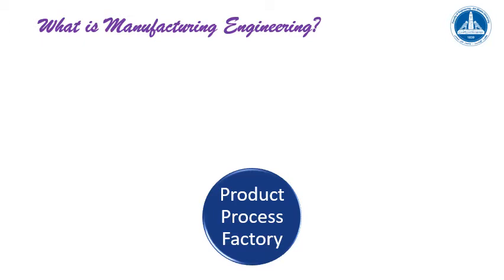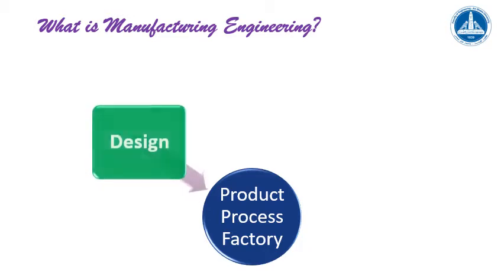We understand where this process occurs, which is the factory. A manufacturing engineer can design a product, especially if it's an engineering product — we are product designers. We can also design the whole factory arrangement and the factory utilities. So we are designers of products, designers of the manufacturing process, and designers of the manufacturing facility itself.